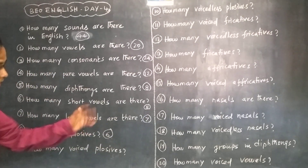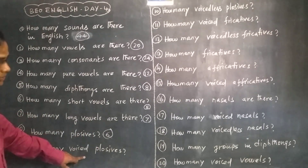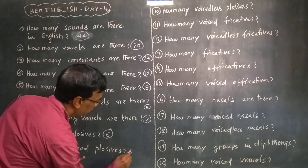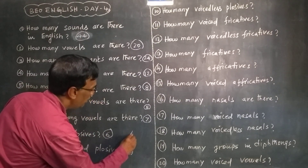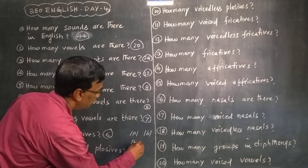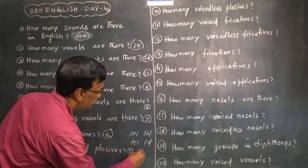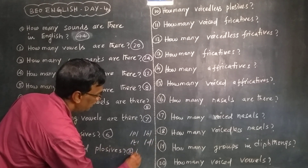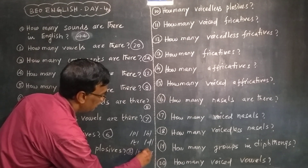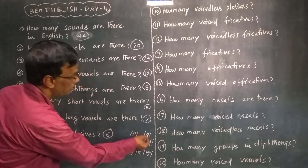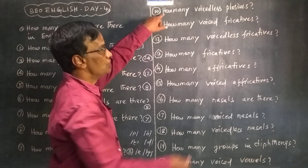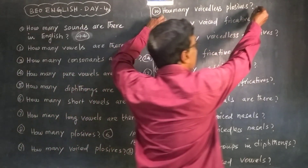How many voiceless plosives? Three. For example: /p/, /t/, /k/. This is voiceless. How many voiceless? That is the other way.